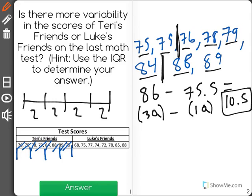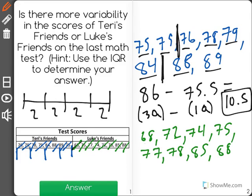Now when we do the same exact calculation for Luke's friends, we find out that the first quartile is 73, and the third quartile is halfway between 78 and 85, which would be 81.5. And when we subtract these numbers, we get a difference of 8.5.